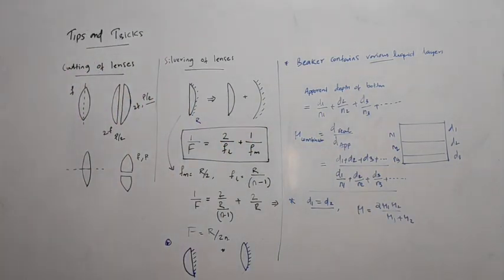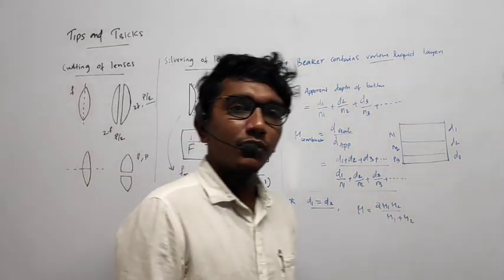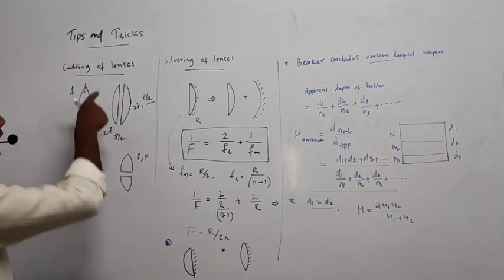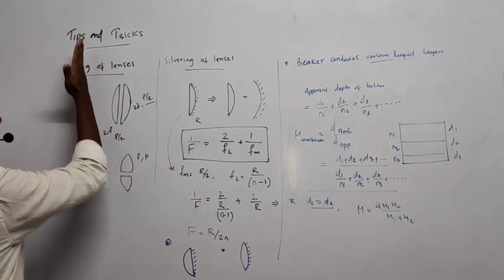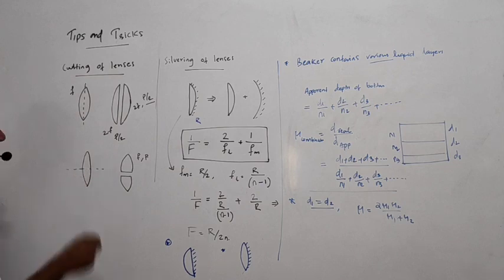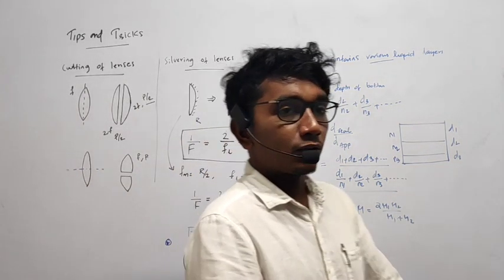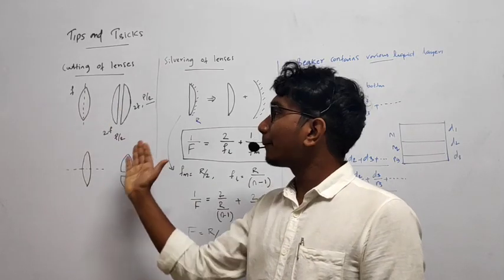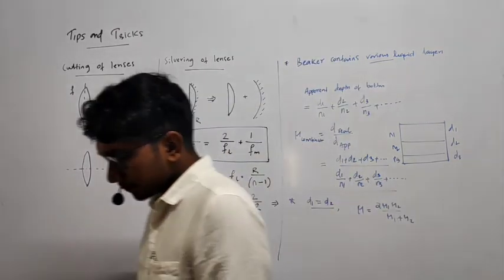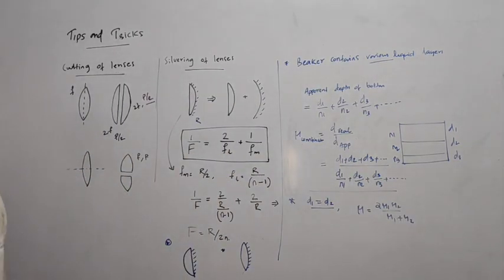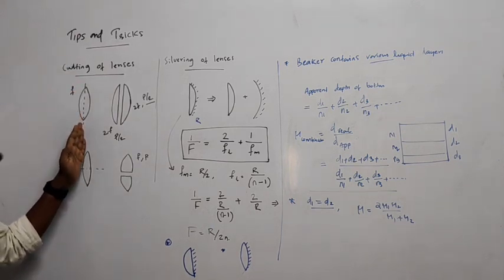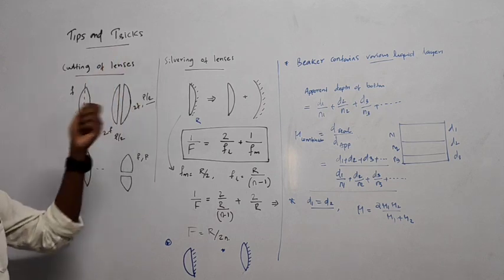First of all: cutting of lenses. You may have seen this before, but if not, please listen carefully. We can cut a lens into two pieces — in a vertical direction and in a horizontal direction. So what would happen to the lens after cutting? This is a common question. When we cut vertically, the two parts of the lens would look like this.